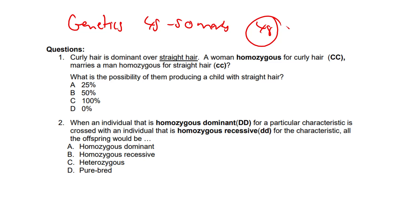Curly hair is dominant over straight hair. A woman homozygous for curly hair, so CC, marries a man homozygous for straight hair, cc. What is the possibility of them producing a child with straight hair? The answer here is definitely D — it's 0%.